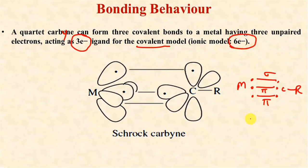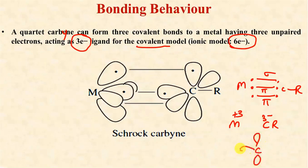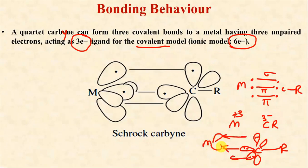In the ionic model, the Schrock carbyne is a six-electron donor species. In the ionic model, the metal loses three electrons, increasing its oxidation state by three units, so each orbital of carbon becomes fully filled. These orbitals then form bonds with the vacant d orbitals of the metal — one sigma bond and two pi bonds — making it a six-electron donor in the ionic model for electron counting.